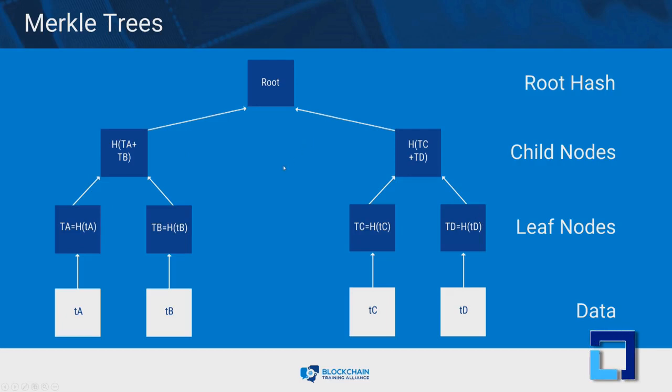Nodes are repeatedly hashed in pairs and the resulting hashes are stored in child nodes until only one node remains — the Merkle root, or root hash.